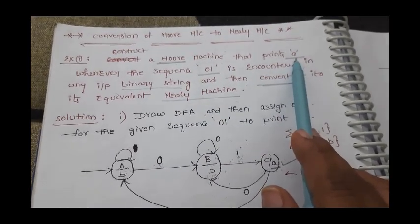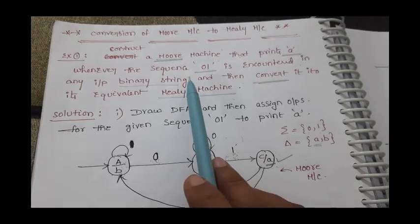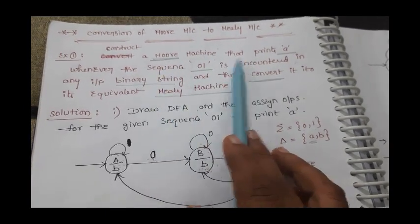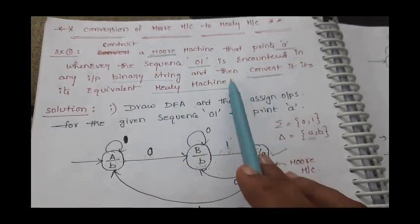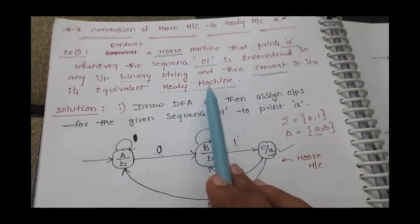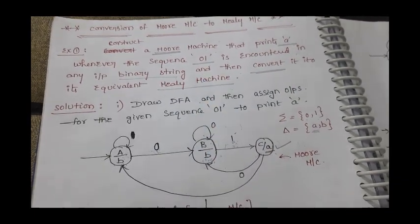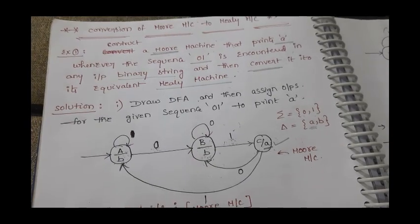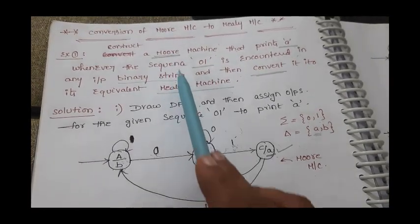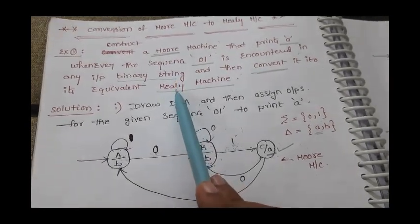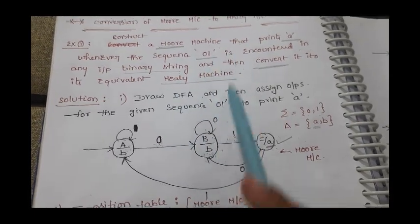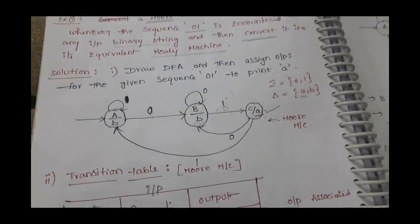We have done similar problems in previous sessions. After constructing this Moore machine for this objective, we need to convert it into a Mealy machine. So the Moore machine is not directly given — we need to construct it first, and thereafter convert it into a Mealy machine.